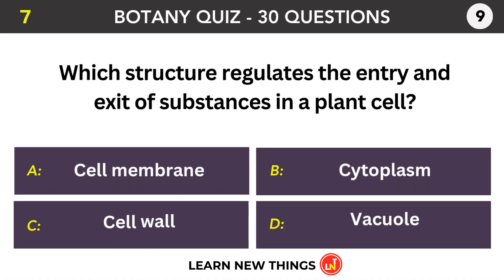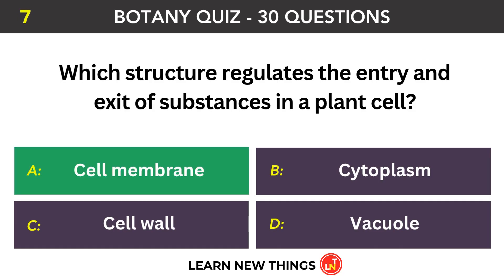Which structure regulates the entry and exit of substances in a plant cell? Cell membrane.